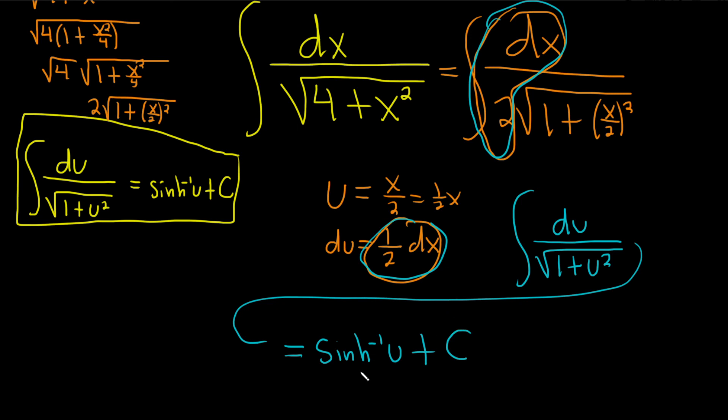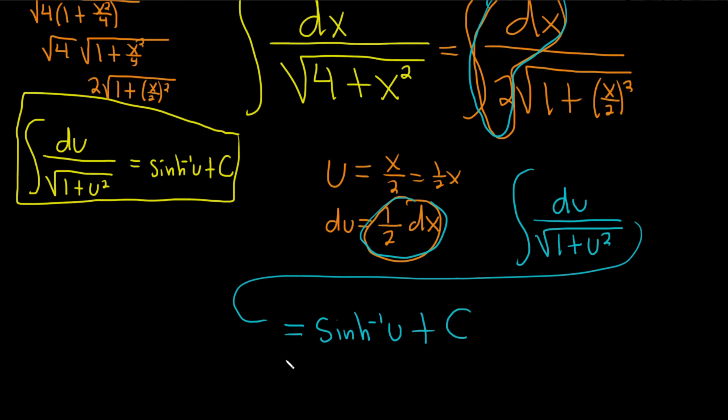And u was x over 2, so this is really sinh inverse of x over 2 plus our constant of integration, capital C. I hope this video has been helpful to someone out there in the world who's trying to learn some mathematics. Good luck.